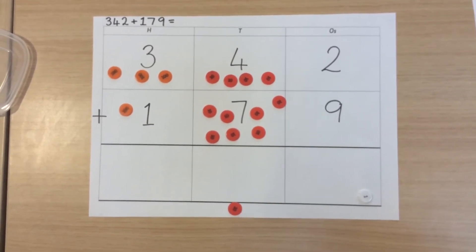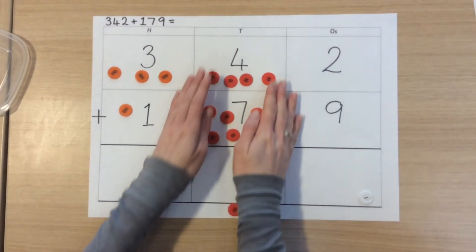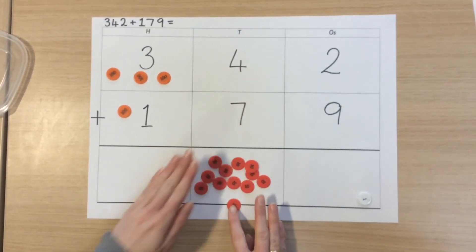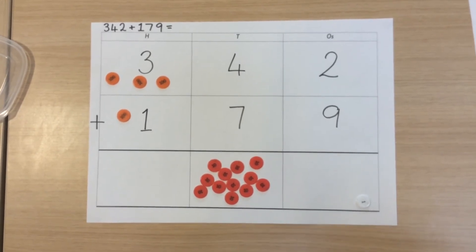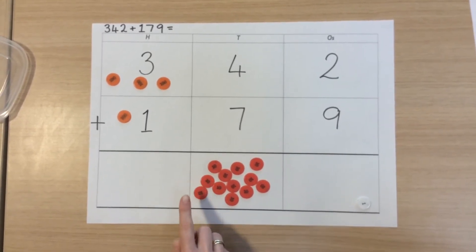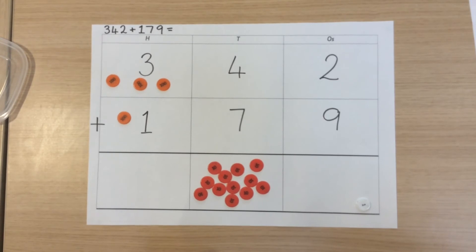We then combine the numbers in our tens column, in this case four and seven. We also need to remember our exchange. So four plus seven plus one gives us twelve.